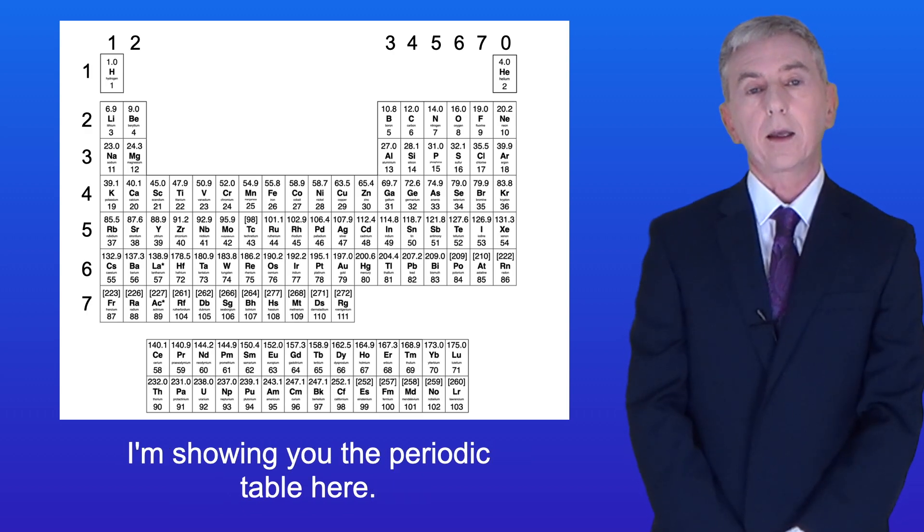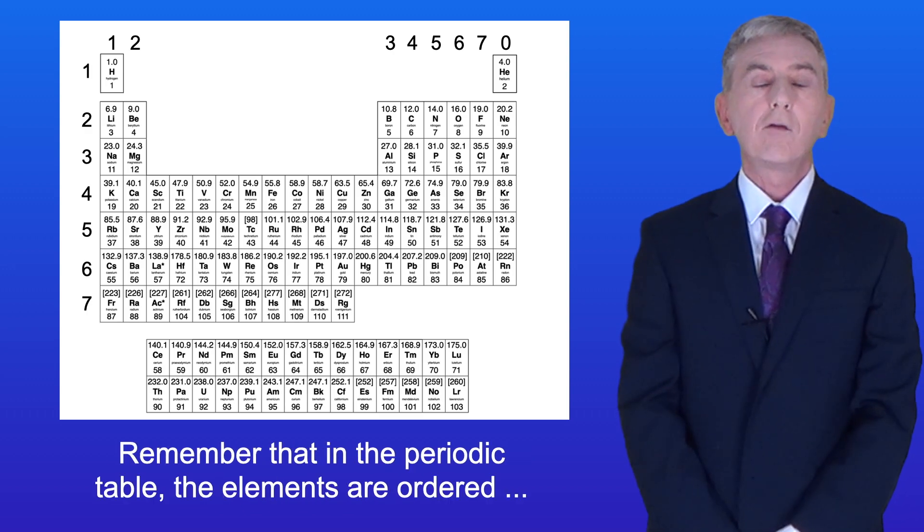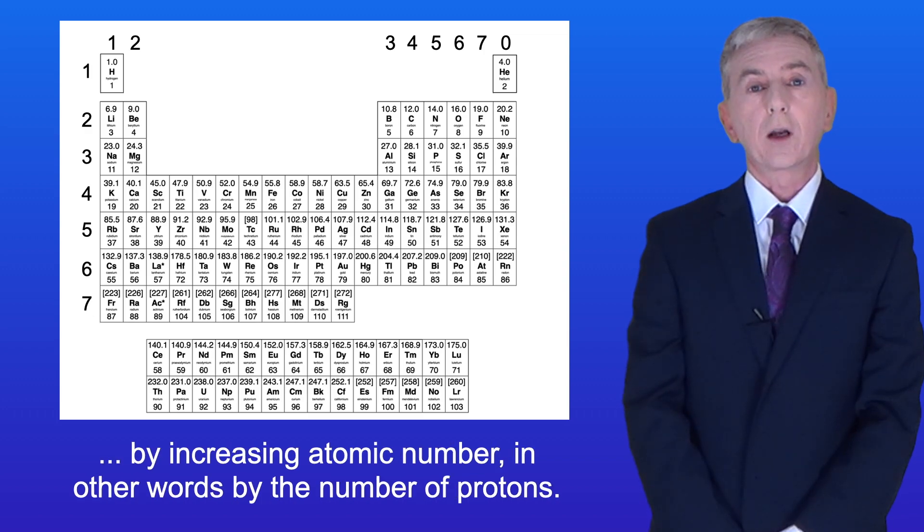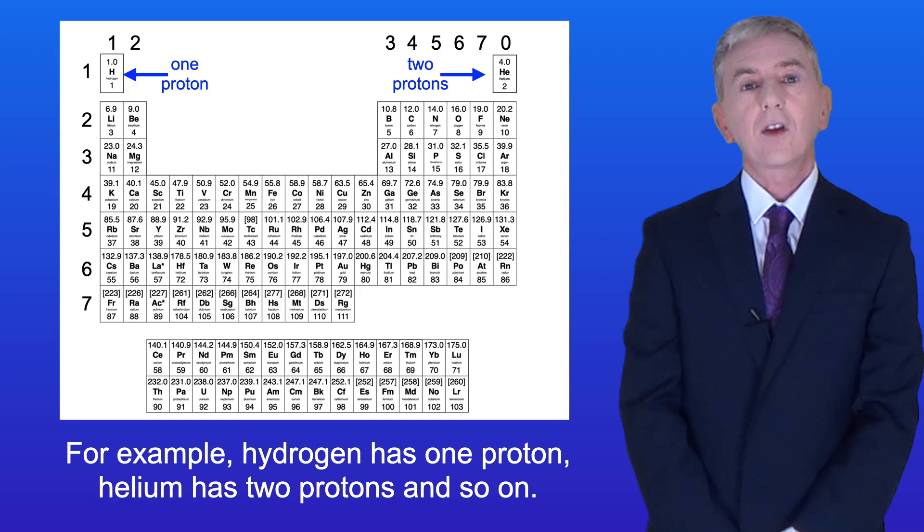I'm showing you the periodic table here. Remember that in the periodic table the elements are ordered by increasing atomic number, in other words by the number of protons. For example, hydrogen has one proton, helium has two protons, and so on.